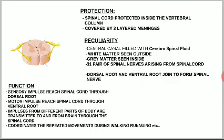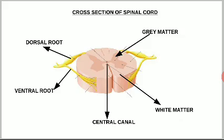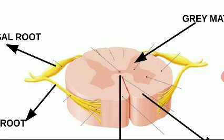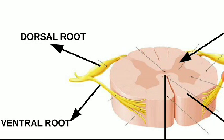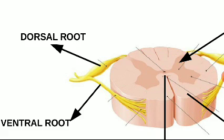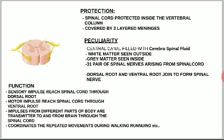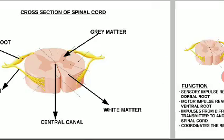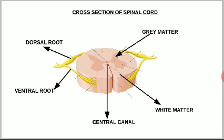Sensory impulses reach the spinal cord through the dorsal root and travel to the brain. The dorsal root is here — sensory impulses go to the brain through the dorsal root. The ventral root carries motor impulses — impulses coming from the brain and going to body parts travel through the ventral root.